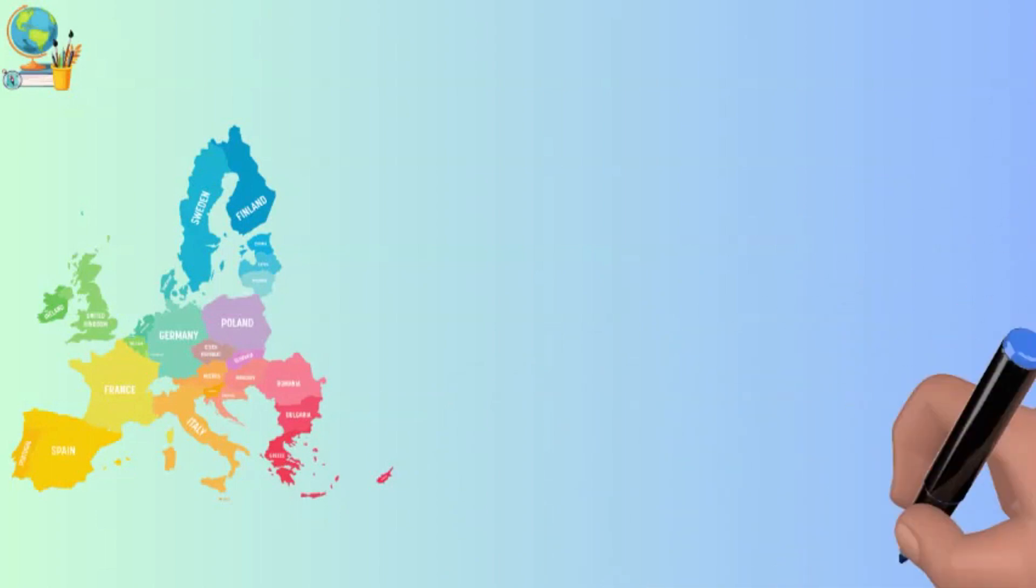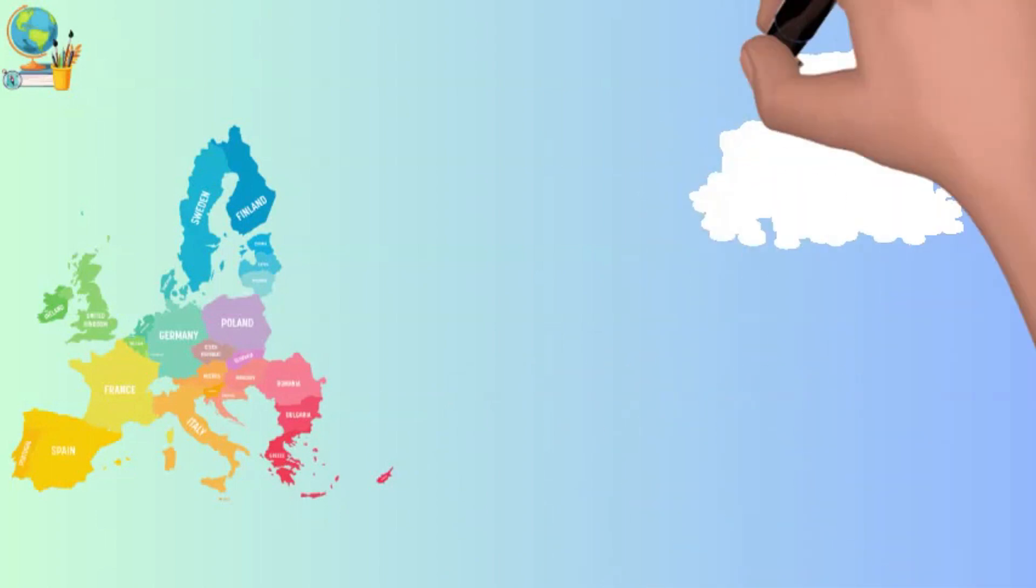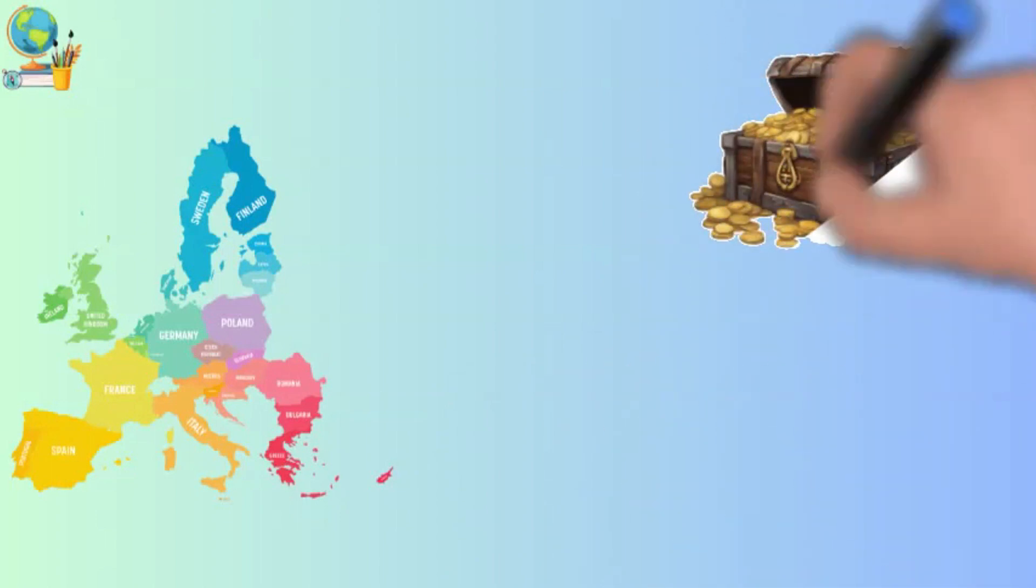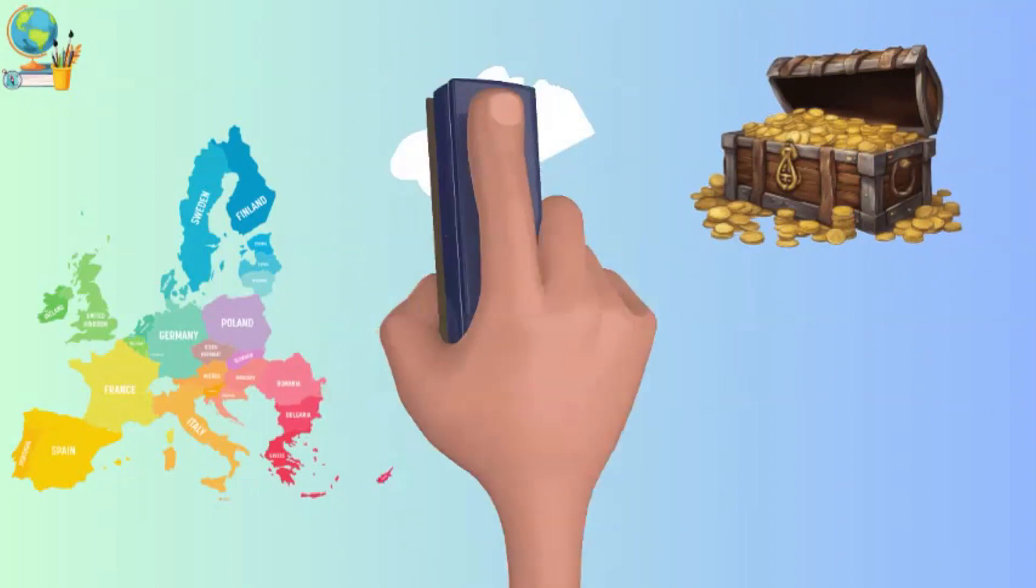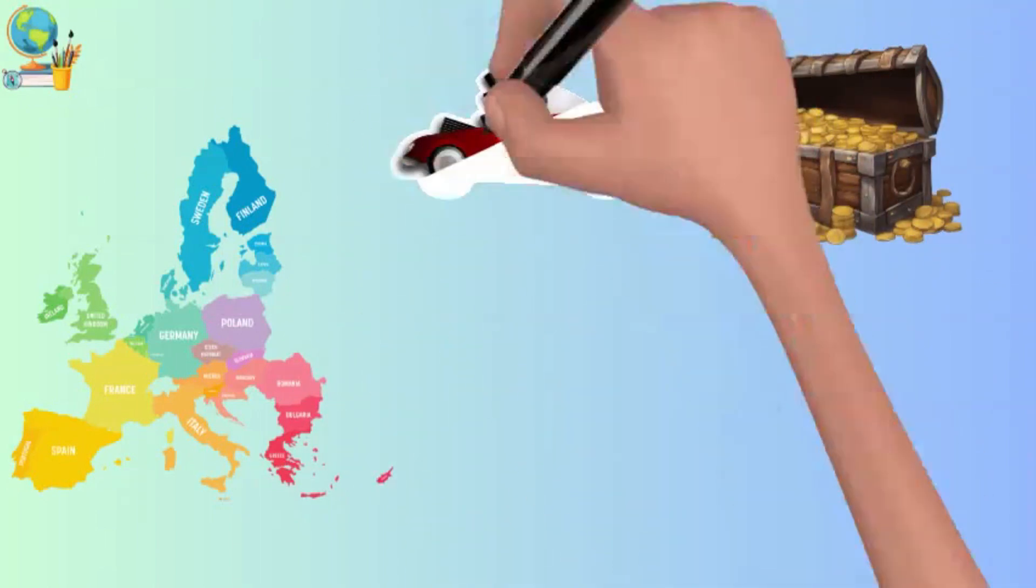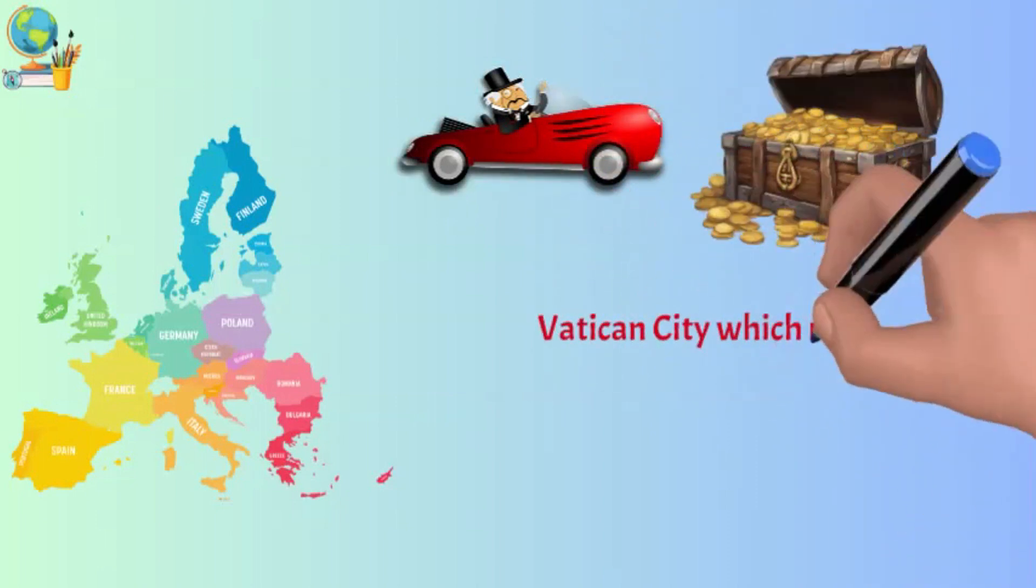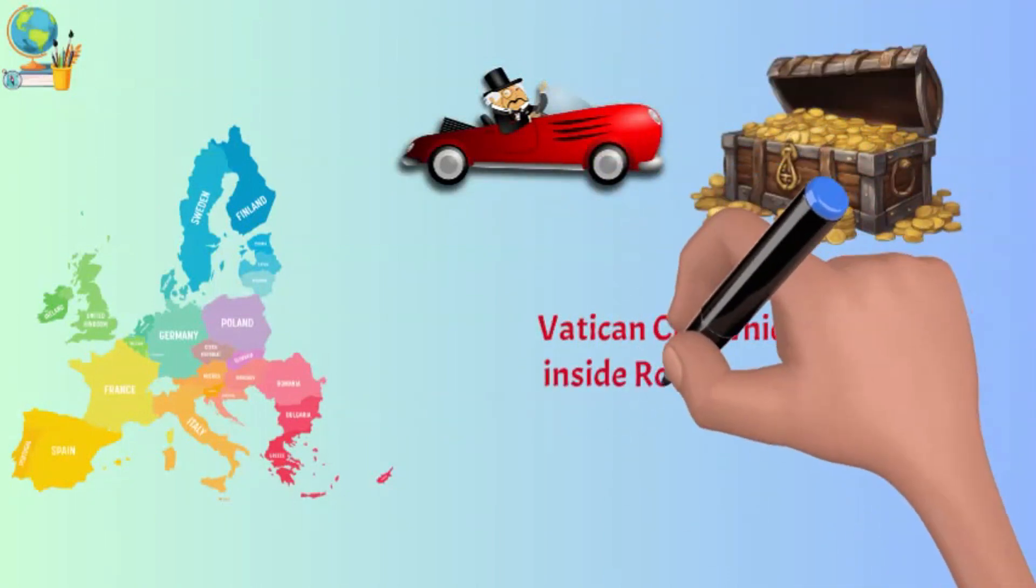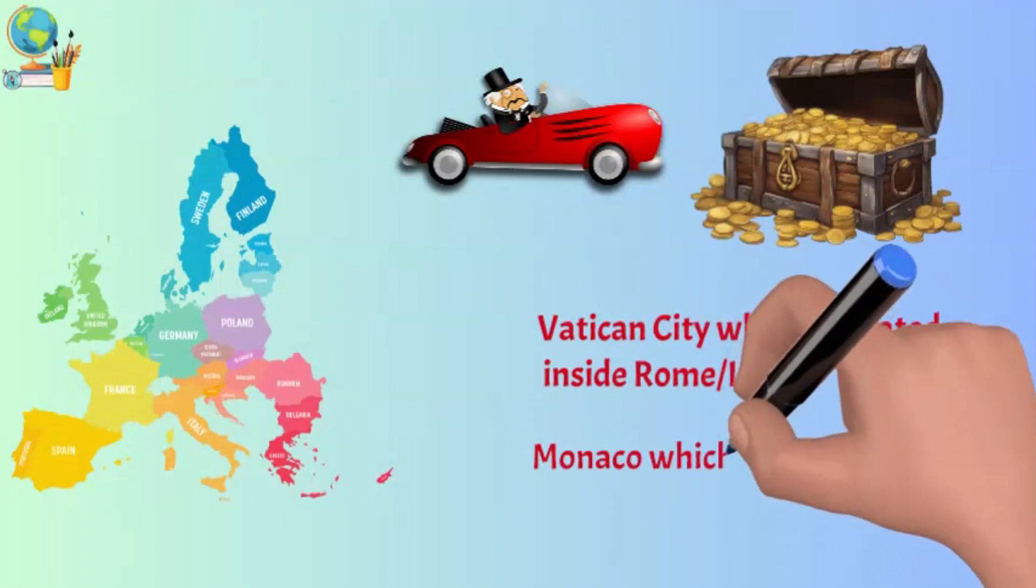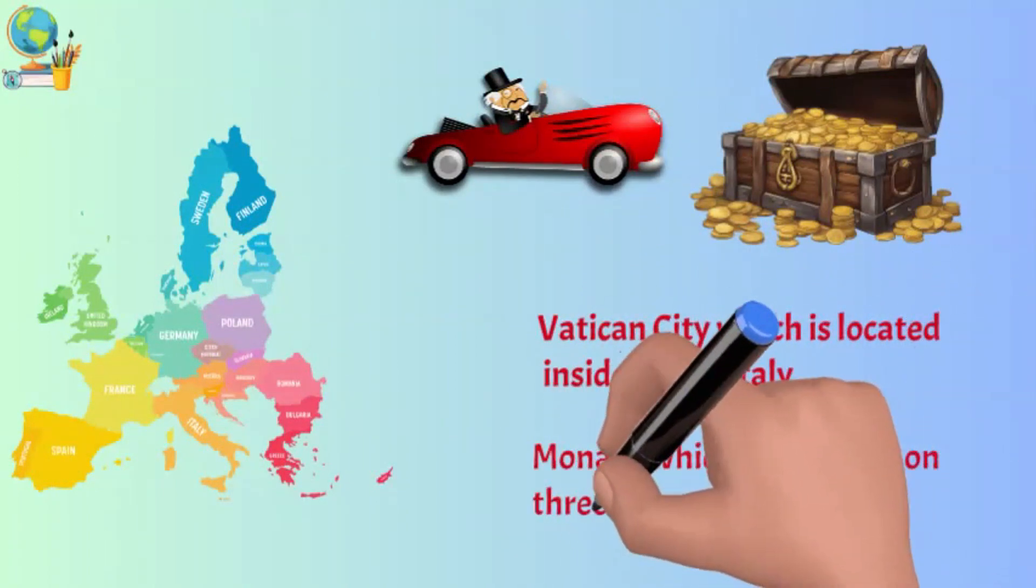Number five: Europe. Europe is considered to be the wealthiest and richest continent. However, there are poor regions especially in the eastern parts of the continent too. Europe houses the two smallest countries in the world: Vatican City which is located inside Rome, Italy, and Monaco which is bordered on three sides by France.